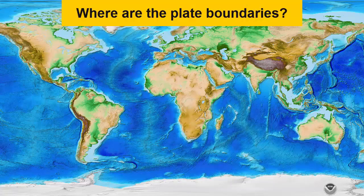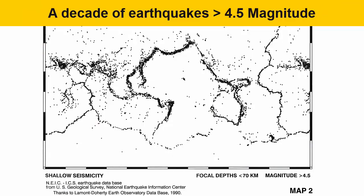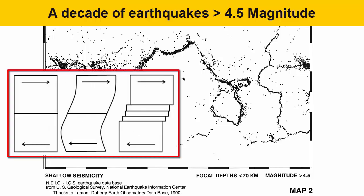Where can we find plate boundaries on the planet? The best way to see plate boundaries is to look for the major earthquakes. Earthquakes form when building stresses within the Earth's solid crust are released in a single instance of motion. These stresses build where plates are being stretched apart, pushed together, or slid beside each other.